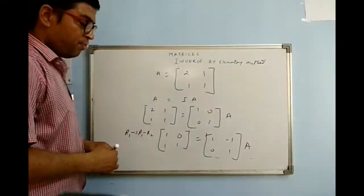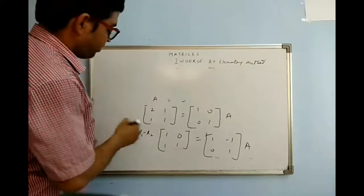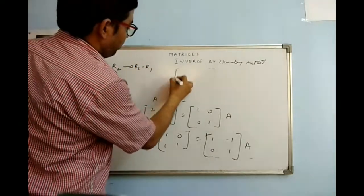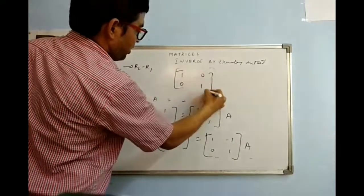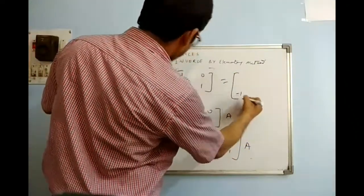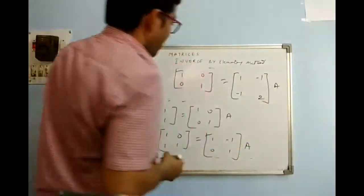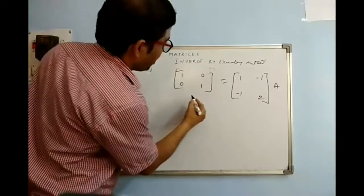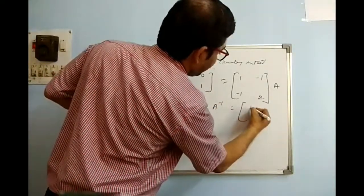Almost done; I have to make the 1 into 0 here. This can easily be done by operating R2 → R2 minus R1. The result at R2 will be [0, 1], giving identity [1, 0; 0, 1]. On the identity side, R2 minus R1 gives [−1, 2; 1, −1]·A. We know this is I, so bringing A to the other side gives us A inverse = [1, −1; −1, 2].